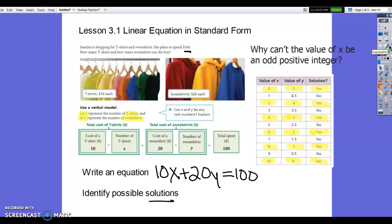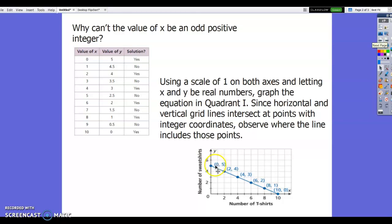Another way to identify possible solutions is to look at a graph. So this is the same table that we just looked at. We can see that 0, 2, 4, 6, 8, and 10 are solutions given in the table. If we want to look at a graph, you can see that the scale is 1, 2, 3, 4, 5, 6, 7, 8, 9, 10. So that's the number of t-shirts. That's your x-axis. We let x be number of t-shirts. And then we let y be the number of sweatshirts. So the number of sweatshirts is on the y-axis. And that goes from 0, 1, 2, 3, 4, 5. So these are both on a scale of 1, which it says using a scale of 1 on both axes. That's our x and our y.